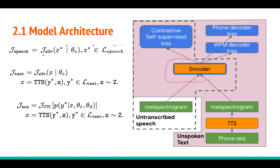Here is the model architecture. There is an encoder — think of it as a transformer or conformer with 20 or 30 layers of multi-head self-attention. The model takes a mel spectrogram as input. Unlike Wave2Vec 2.0, which uses raw audio, here they use mel spectrogram. The simple change is: instead of 1D convolution layers in the feature encoder, you use a 2D convolution layer. The heavy lifting is done by the context network, not the feature encoder.